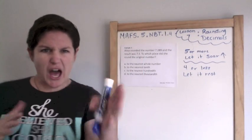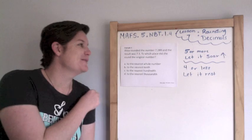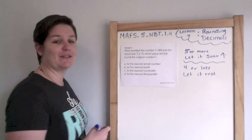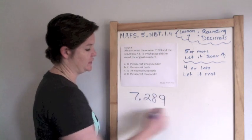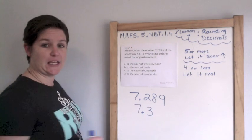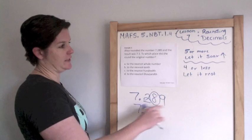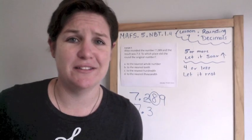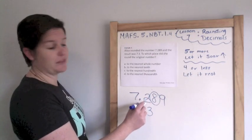Example three. I don't know what that was. Alice just felt like doing that. Alice rounded the number seven and two hundred eighty nine thousandths, and the result was seven and three tenths. To which place did she round the original number? So she says she got that. She had this, her original number, and when she rounded it, her result was this. Let's see which place remains. It looks like she rounded to the tenths place because the eight next door would let it soar up to a three and everything else becomes zero. Or in fifth grade case, the decimals non-existent. You don't even need them there. So to the nearest tenths place.